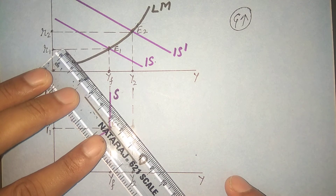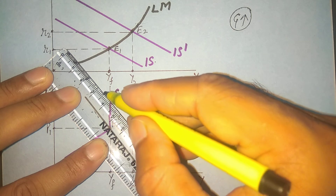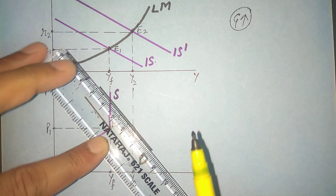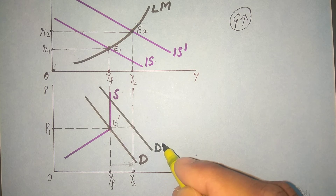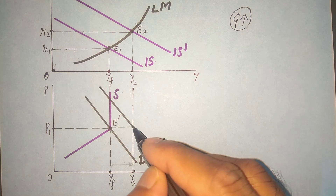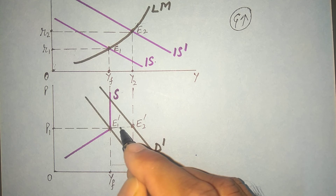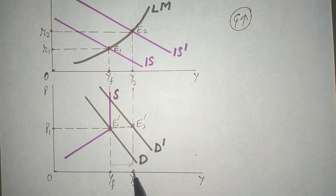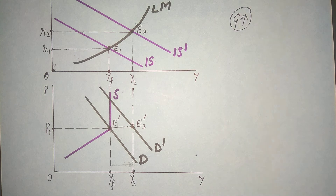We shift the demand curve to the right side. Now you can see this is the new demand, D dash. This is the new equilibrium E2 dash, and this is the new output level Y2. The price is the same, P1 — no inflation here. If the output increases it will come here.